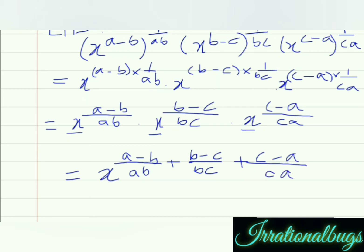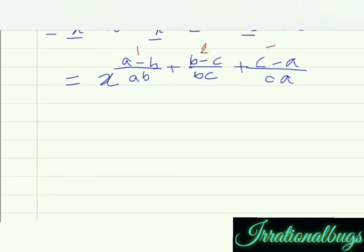अब इसे further solve करने के लिए हमें ab, bc and ca का LCM देना पड़ेगा. Denominators generally numbers होते हैं और हमें numbers का LCM लेना आता है, पर यहां हमारे पास denominator variables हैं. तो अगर directly देखें तो ab, bc and ca का least common multiple a, b, c होगा.